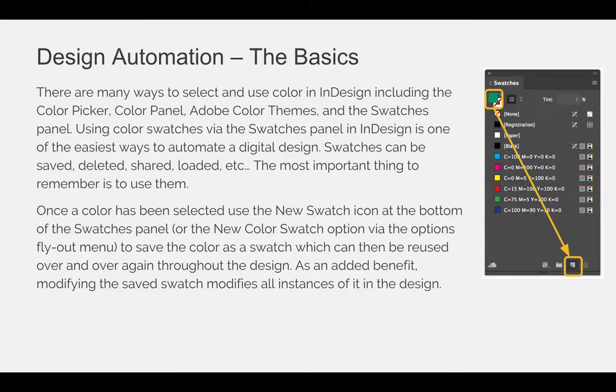There are many ways to select and use color in InDesign, including the color picker, the color panel, color themes, and the swatches panel. Using color swatches via the swatches panel in InDesign is one of the easiest ways to automate a digital design. Swatches can be saved, deleted, shared, loaded, etc. The most important thing to remember is to use them, and we should already be in best practice of using swatches since we've already covered that earlier in this semester.